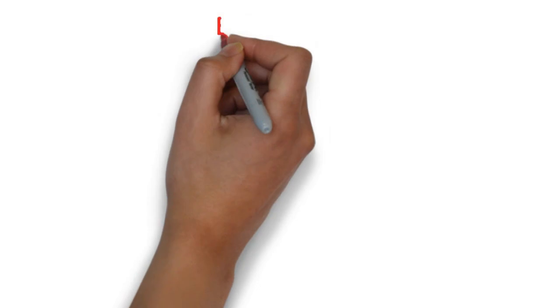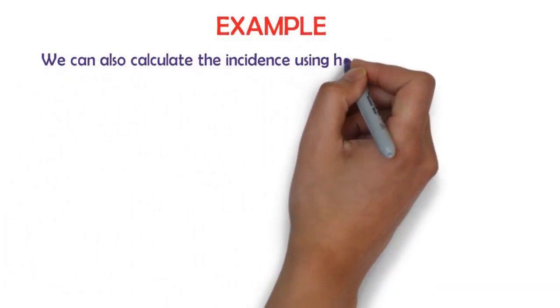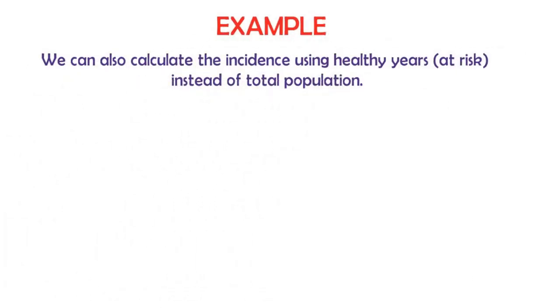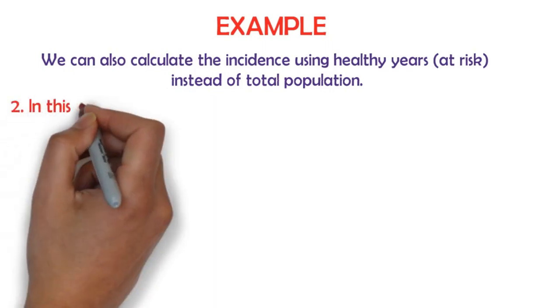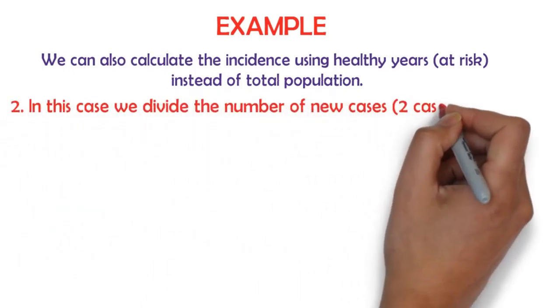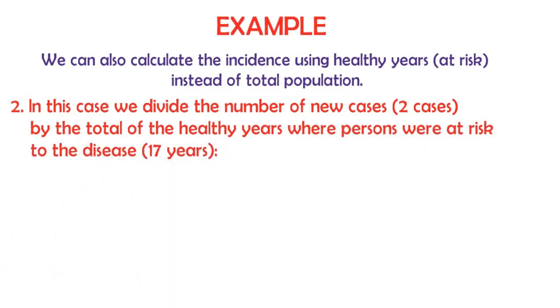In example two, let's calculate the incidence using healthy years instead of total population. In this case, we divide the number of new cases, which is 2, by the total of the healthy years where persons are at risk to the disease, which is 17 years.